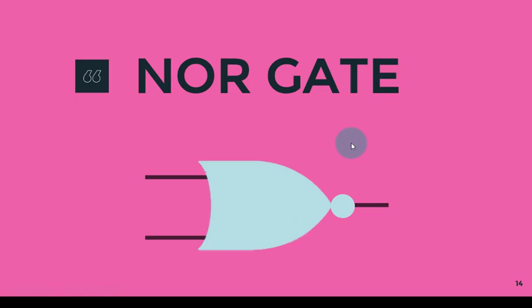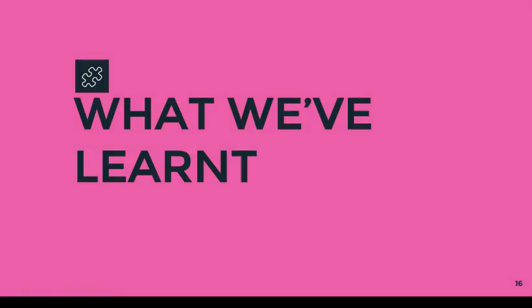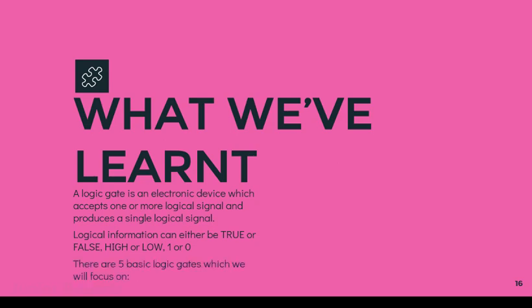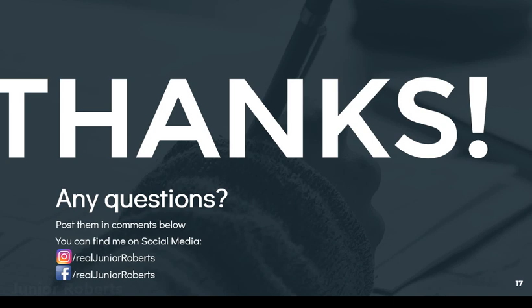Those are essentially our five logic gates. To quickly wrap up what we have learned: a logic gate is an electronic device which accepts one or more logical signals and produces a single logical output signal. Logical information can be either true or false, high or low, or one or zero. The five basic logic gates we focused on are the NOT gate, the AND gate, the NAND gate, the OR gate, and the NOR gate.